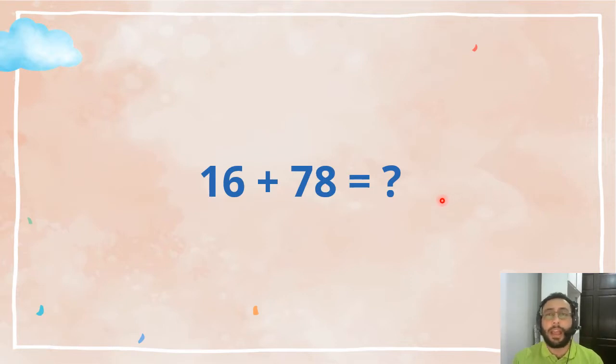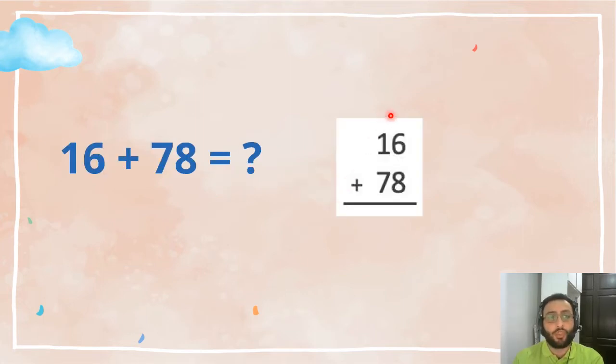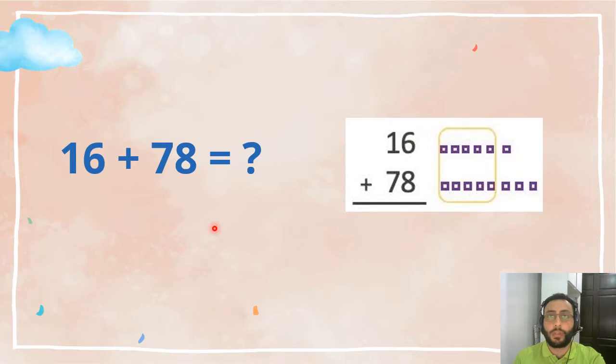So when we have 16 plus 78, what do we do now? Easy. You write it in the column form and we start from the right side. So 6 plus 8.